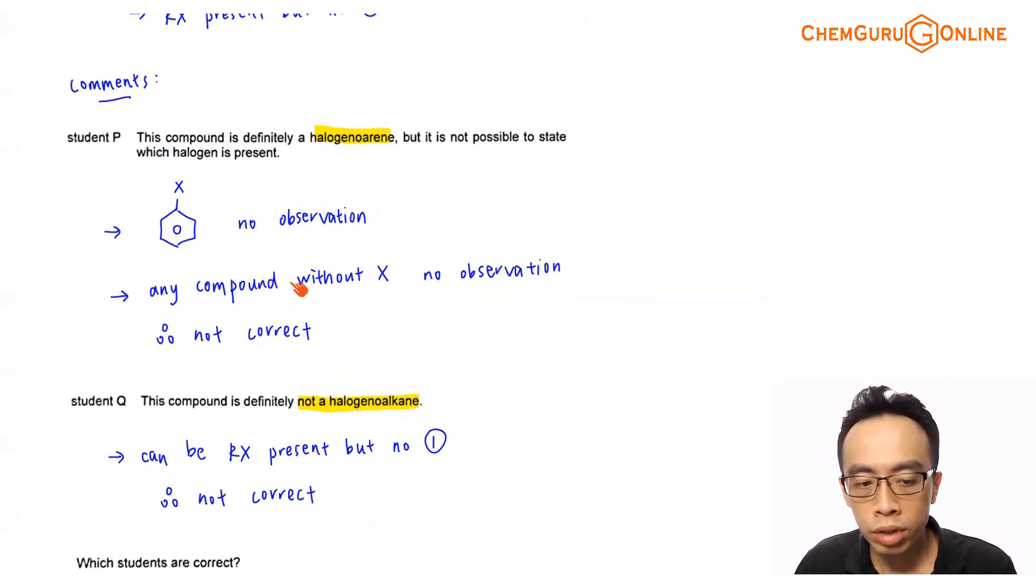Now how about student Q? Student Q says that this compound is definitely not a halogenoalkane. Now again, it goes back to involving the first step required, my nucleophilic substitution using NaOH aqueous reflux. By right, we do need that substitution reaction to kick out a free halide so that I can precipitate the free halide when I add Ag+ in the second step. So there is this possibility that the compound can be a halogenoalkane. It's just that because there's no prior substitution, therefore the free halide is not being kicked out, then I cannot get any precipitate. Might be because of that. That means the way we do the precipitation test using your warm silver nitrate is not sufficient for me to precipitate out my X-, that's also possible. So this means that what student Q mentioned is also not correct.